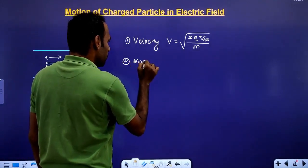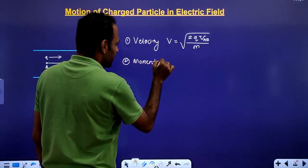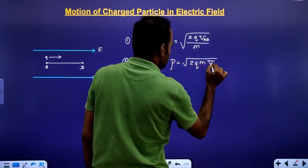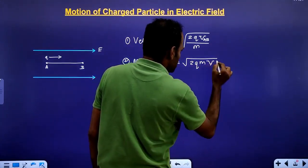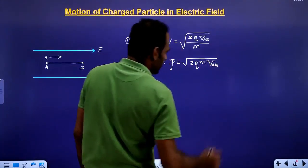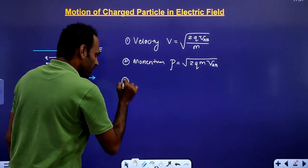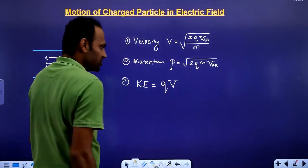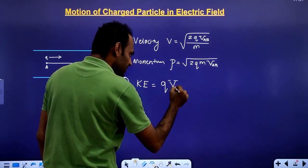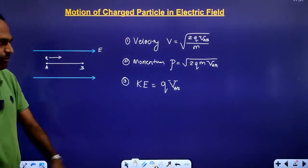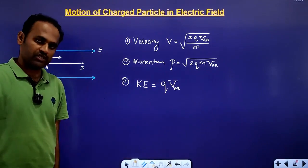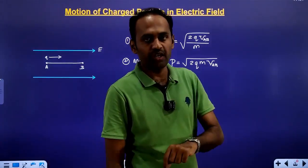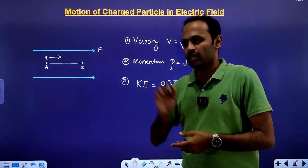The momentum of the charged particle is given by P = √(2QM·V_AB), where V_AB is the potential difference between A and B. The kinetic energy of that particle equals charge times the potential difference between the two points. So: KE = Q × V_AB. These are the formulas in terms of potential related to the motion of a charged particle in a uniform electric field.